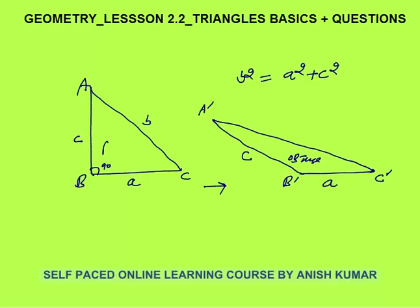This is a right angle triangle. By common sense you can see that if A and C are the same, the length B would become B dash. What is the relation between B dash and B? By observation, B dash is greater than B, because if I tilt side C, this length becomes greater.